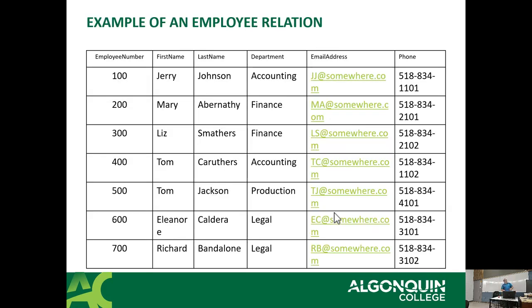Here's an example of an employee relation — also known as a table — with employee number, first name, last name, department, email address, and phone. Every row is an instance. Every intersection of a row and a column has only a single value in it. The first name column has all the same kind of information; email address has all the same kind of information. Thus this is a proper relation.